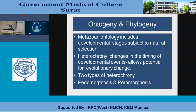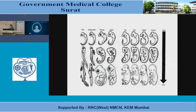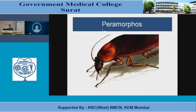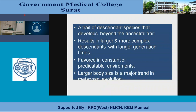Natural selection acts through heterochrony — changes in the timing of developmental events — allowing potential for evolutionary change. Two types are paedomorphosis and peramorphosis. Paedomorphosis: a trait of a descended species resembles an ancestral juvenile form, common in species with short generation times living in unpredictable environments, adapted to colonize new habitats. Peramorphosis: traits of descended species develop beyond the ancestral trait, resulting in larger and more complex descendants, favored in constant or predictable environments.